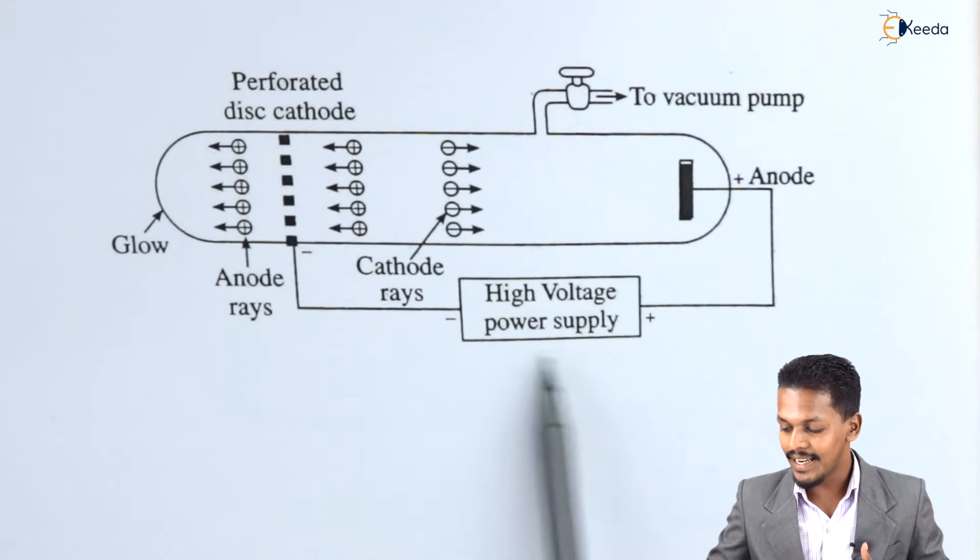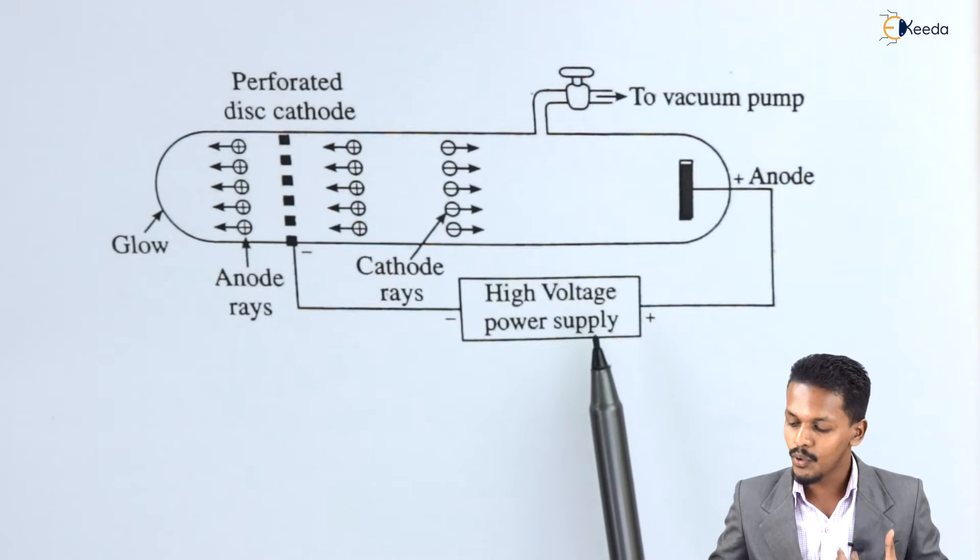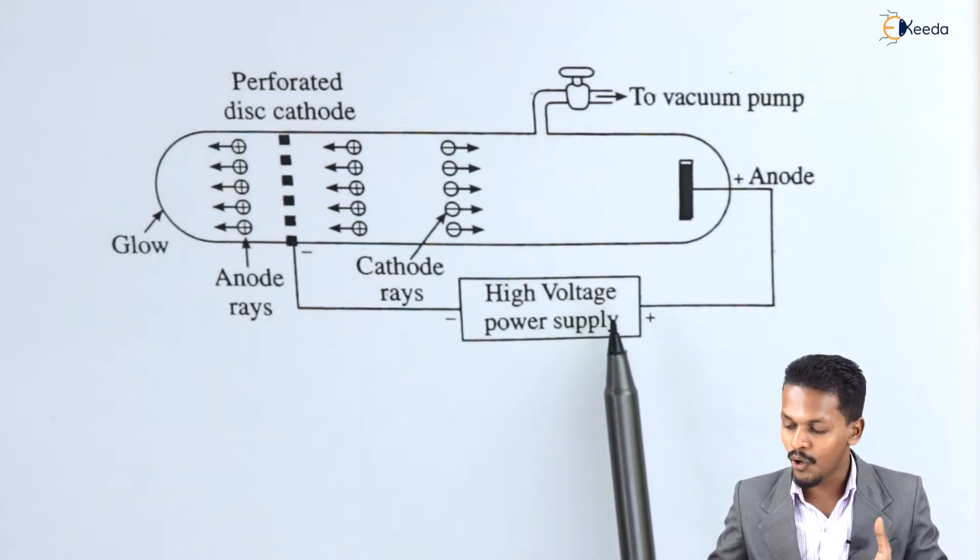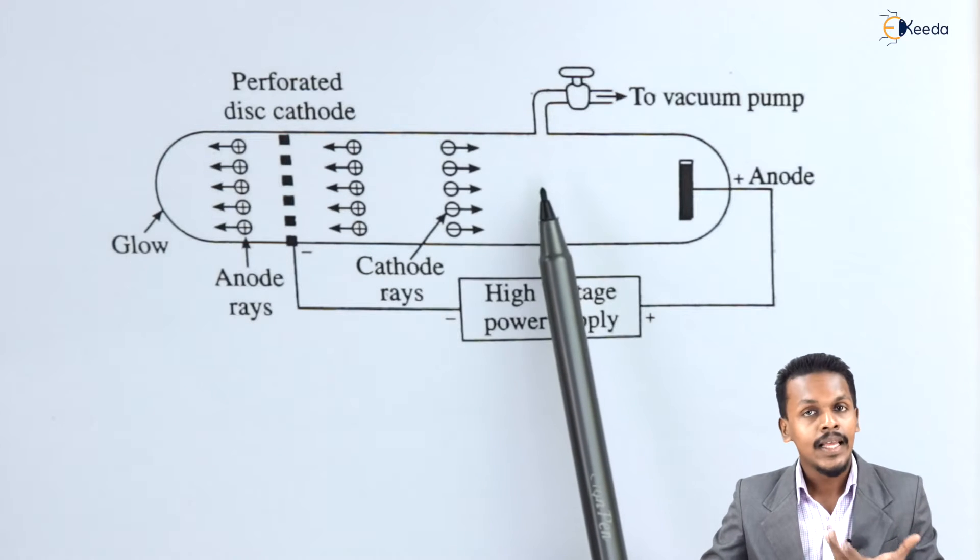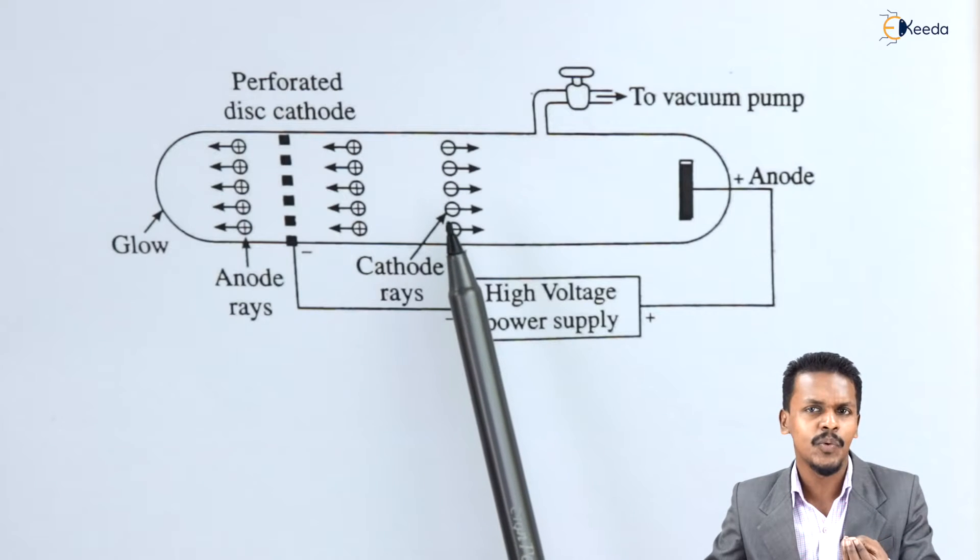And here there is a power supply, that is high voltage power supply of 5000 to 10000 volts. And similarly the process goes on. In this discharge tube there is presence of a particular gas, especially suppose hydrogen gas.